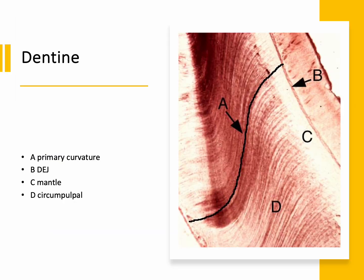Contour lines of Owen can also be seen between primary dentine and secondary dentine. This slide shows the primary curvature and the S-shape of it.